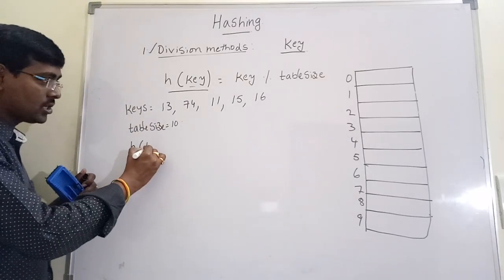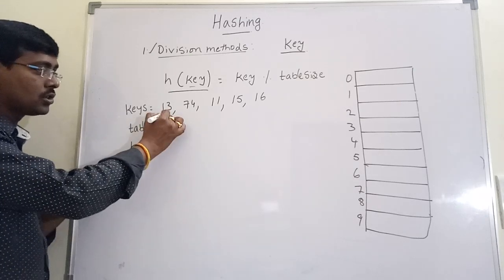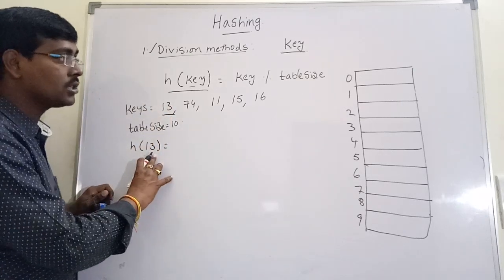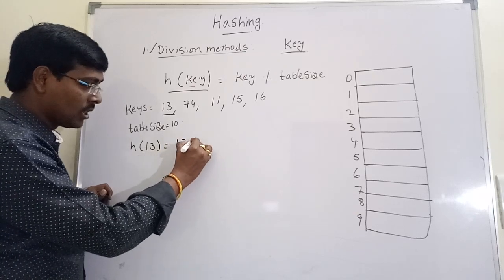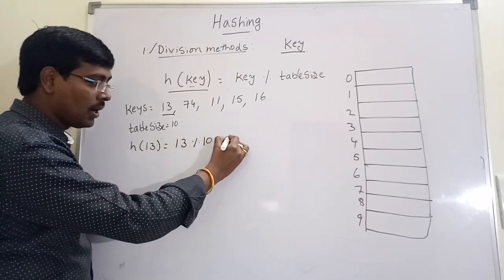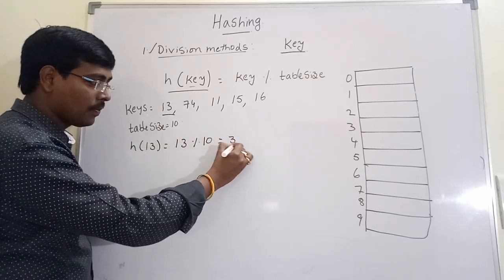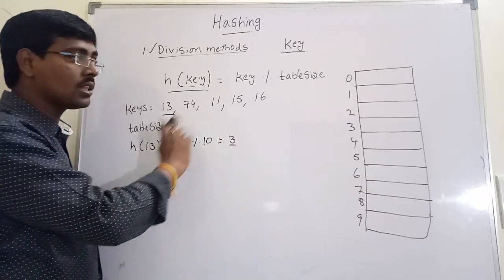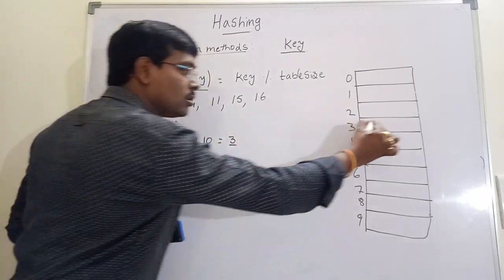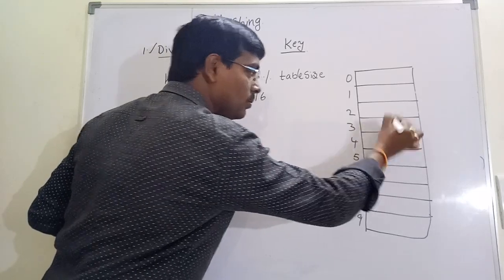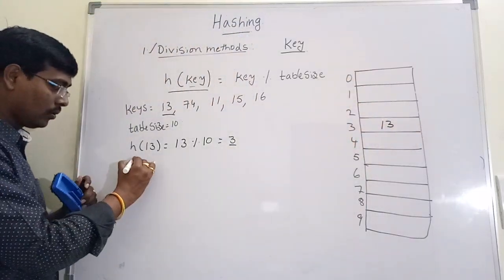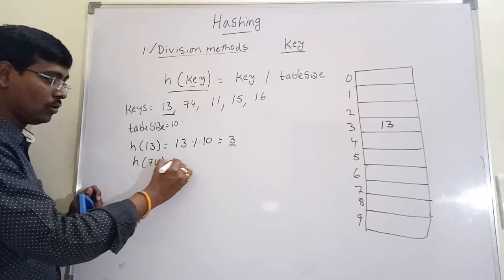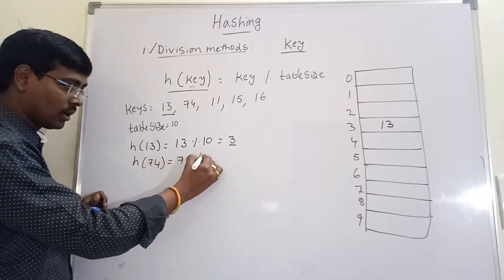Now perform hashing operations. h(13) = 13 mod 10, remainder is 3 — so at position 3 we are placing key 13. Key 13 is placed at position 3. Next, insert 74: 74 mod 10, remainder is 4 — so key 74 is placed at position 4.